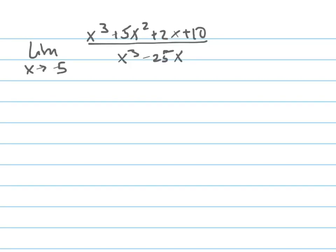This problem is asking us to find the limit as x goes to negative 5 of this crazy irrational function. And what you're going to have to do is factor. You've got to do quite a bit of factoring here.